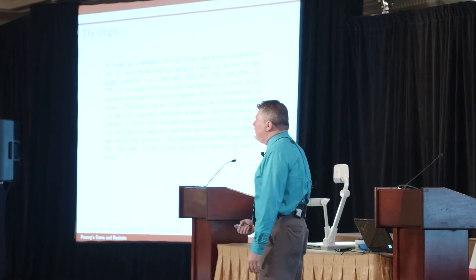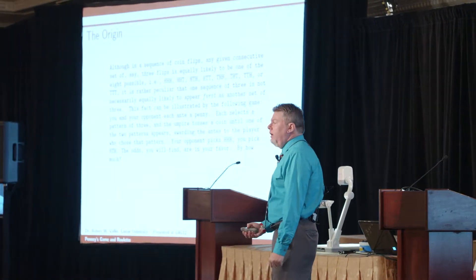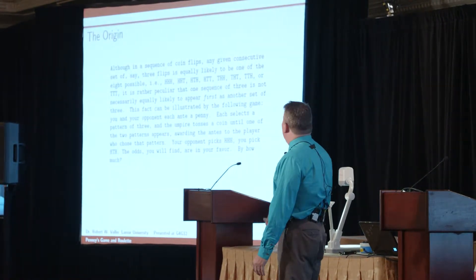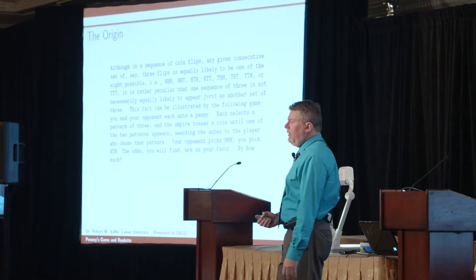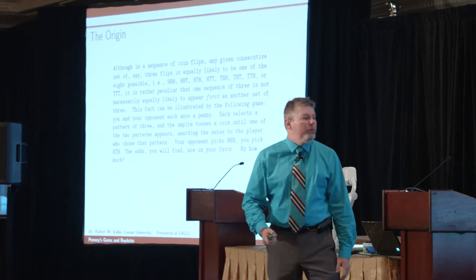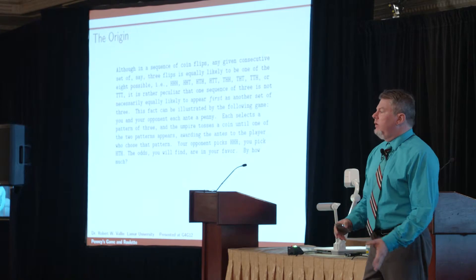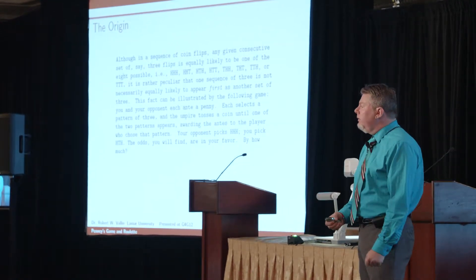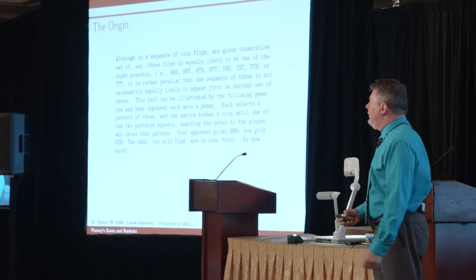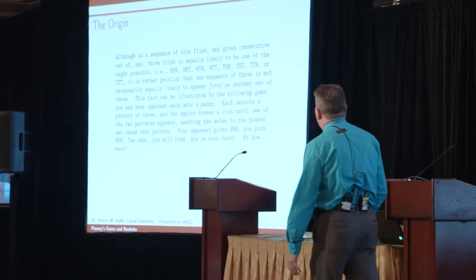The eight possibilities are all equally likely. But if player one picks heads, heads, heads, and player two picks heads, tails, heads, it turns out the odds are in player two's favor. And the question was just by how much? Because I have six minutes, we'll skip to the answer: the odds in favor of heads, tails, heads is three to two.